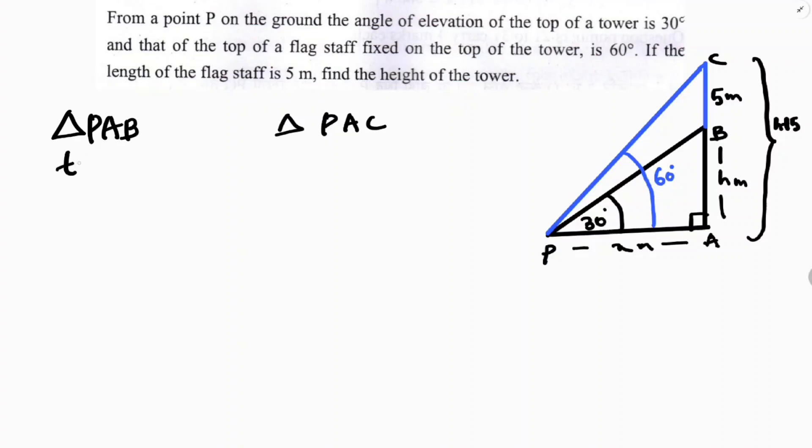In triangle PAB, tan theta is opposite by adjacent. Here, tan 30°, opposite is h, adjacent is x. So, tan 30° is 1 by root 3 equals h by x. So, x equals h root 3.